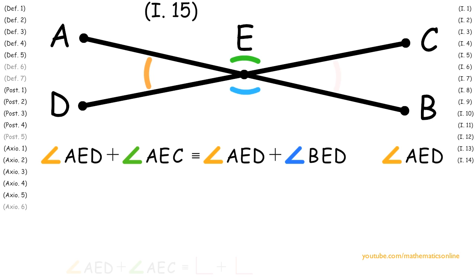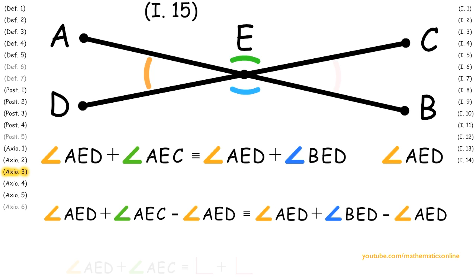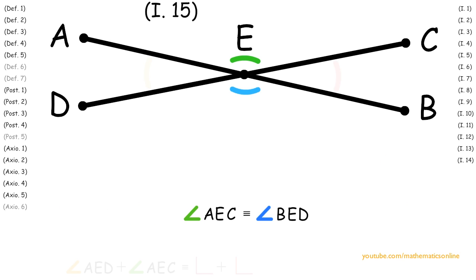Now, with angle AED, we apply Axiom 3 to show that angle AED plus angle AEC minus angle AED is congruent to angle AED plus angle BED minus angle AED. And what this turns out to be is angle AEC is congruent to angle BED.